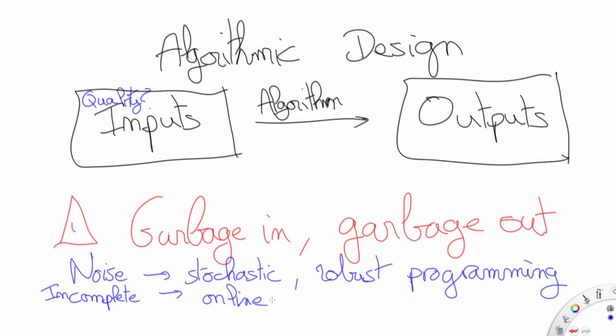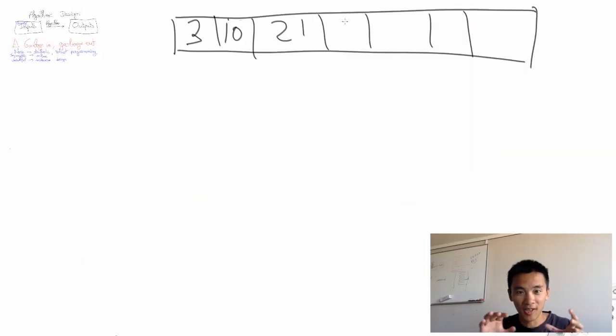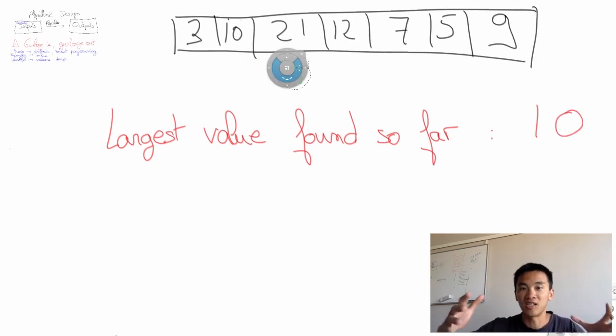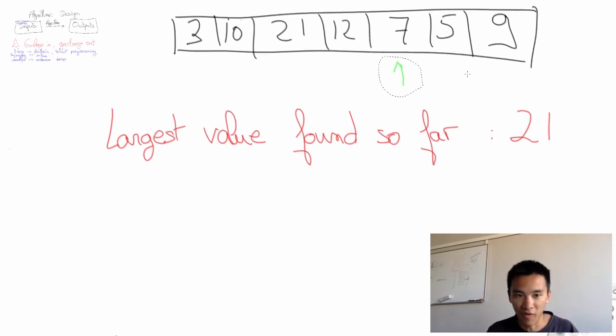But in this video, what I want to focus on is another third reason: the fact that the person who provided us the inputs might not have revealed them truthfully. As a basic example of that, let us consider the problem of finding the largest value in an array. Evidently this is a solved algorithmic problem—just go through the list, keep in memory the largest value you've found so far, and once the list has been entirely analyzed, the value in memory will be the largest of them all.